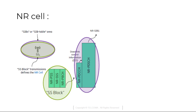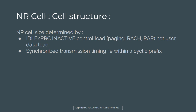The SIB table area contains SS block information or transmissions which define the new radio cell. The cell size is determined by IDLE or RRC inactive control load, which carries the paging.